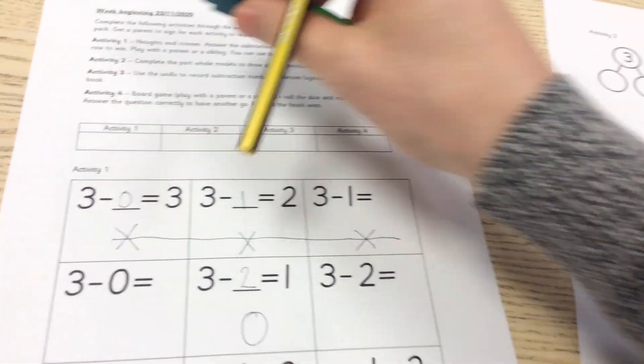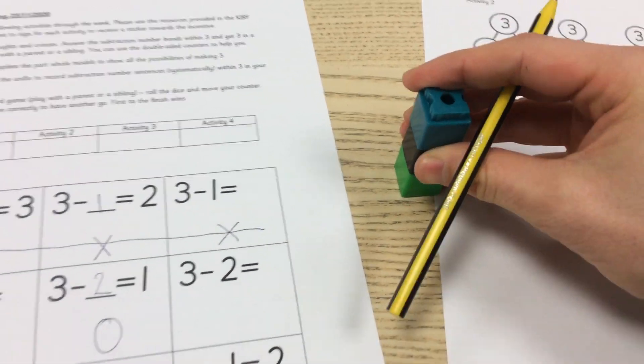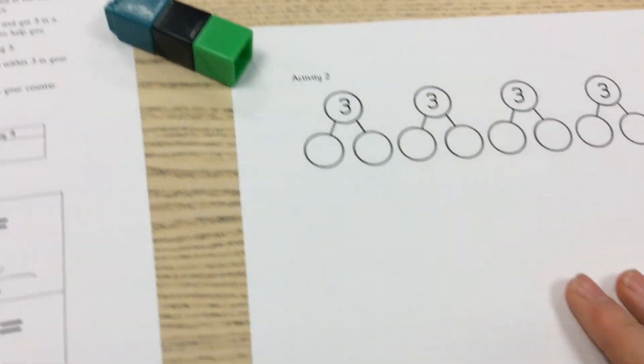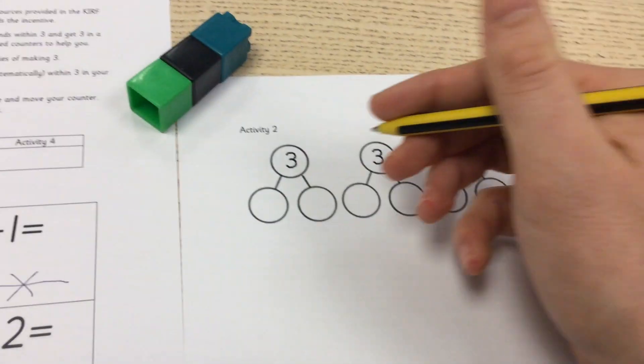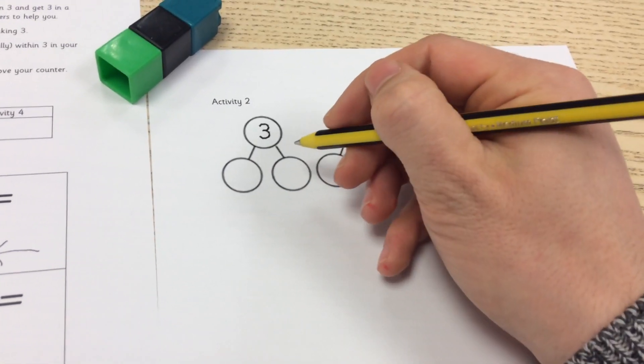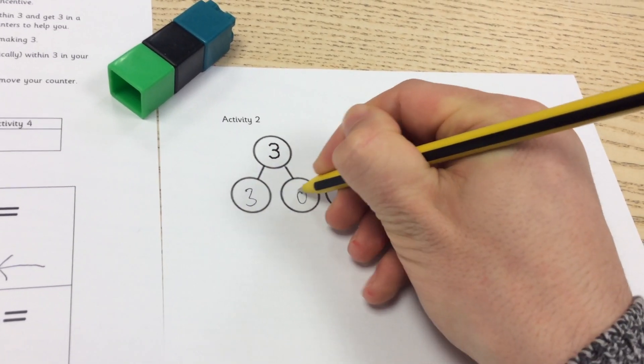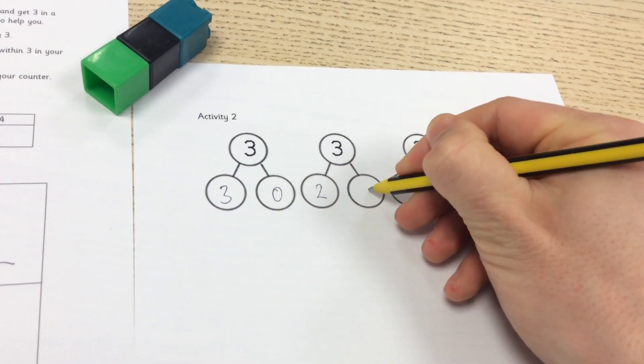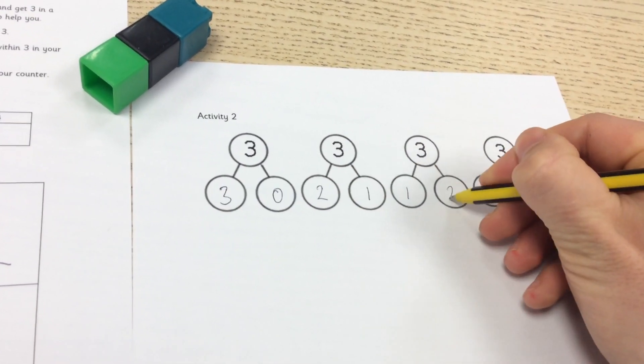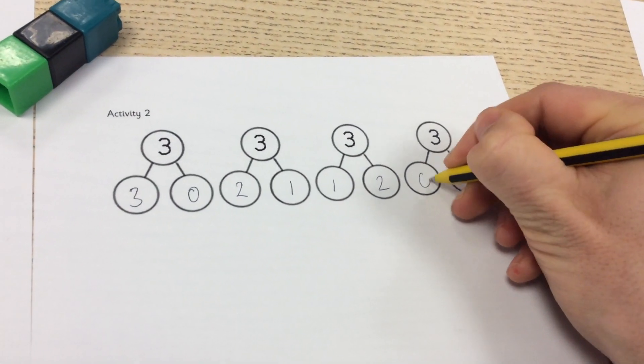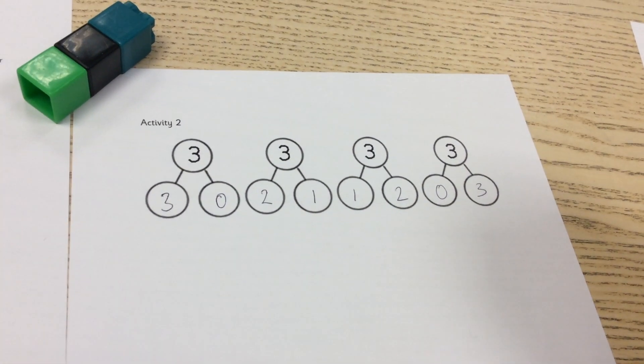Activity 2, I have kept activity 2 the same and it is for a good reason. Activity 2 is just the part-whole model. So I know that 3 add 0 equals 3, 2 add 1 equals 3, 1 add 2 equals 3, and 0 add 3 equals 3.